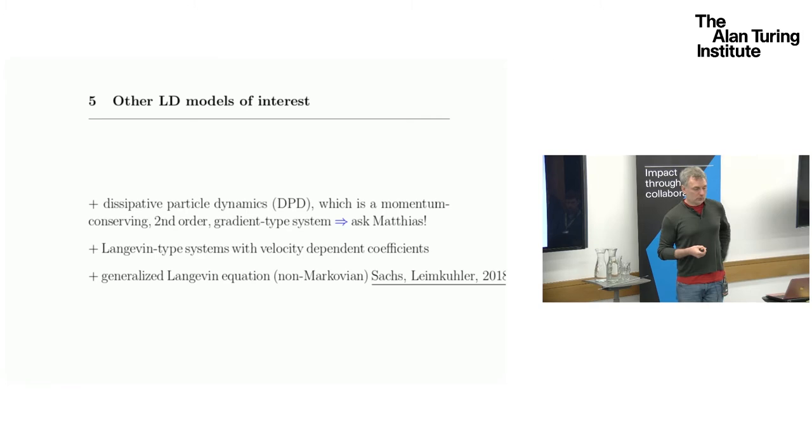I want to say something about other Langevin dynamics. The velocity-dependent coefficients would be interesting, and they've been studied somewhat, but not by us. There is a generalized Langevin equation, and there's a recent paper by Mathias and Ben on this. These are non-Markovian Langevin dynamics, which on your way from micro to macro, you stumble onto this kind of thing with a kernel. Your terms depend a little bit on the past with exponentially decaying coefficients.